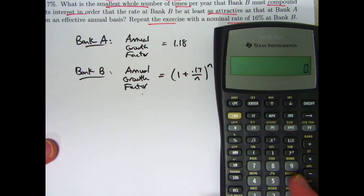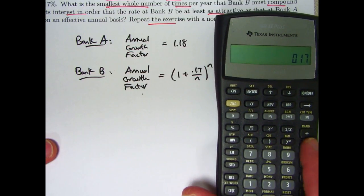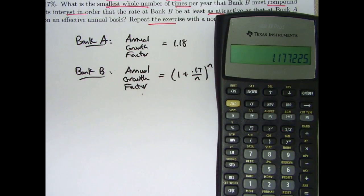Let's go ahead and be systematic. Certainly, N equals 1 will not work, but let's try N equals 2. If I go 0.17 divided by 2, and then add 1, and square that. That is not bigger than 1.18, so N equals 2 is not the answer.